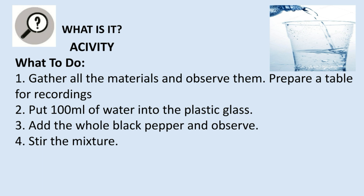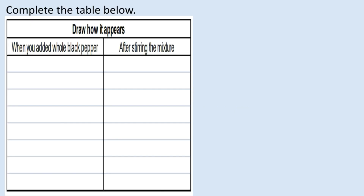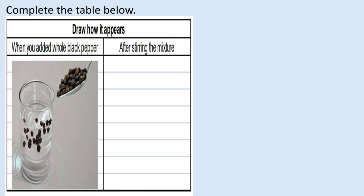What to do: gather all the materials and observe them. Prepare a table for recordings. Put 100 ml of water into the plastic glass. Add the whole black pepper and observe. Then stir the mixture. Complete the table below — draw how it appears when you added the whole black pepper, then draw after stirring the mixture.